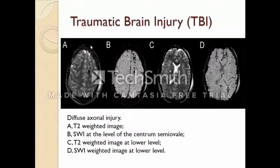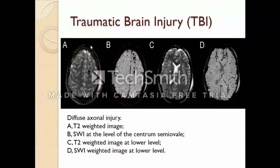Here you can see the diffuse axonal injury, which is a type of brain trauma. In picture A, T2 weighted images visualize this trauma but it is not detailed enough. At the susceptibility weighted image at the level of the corpus callosum we can see the boundaries of the trauma, but at lower levels of the brain this trauma can be observed in a better way. SWI is still advantageous over T2 weighted images since this trauma has other effects at different sides of the brain, as shown with the arrows in pictures C and D.